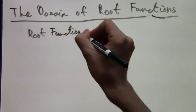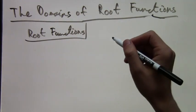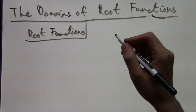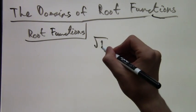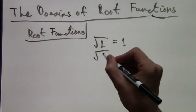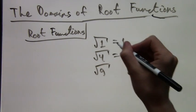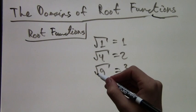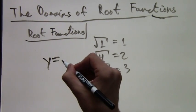For example, the square root of 1 equals 1, the square root of 4 equals 2, and the square root of 9 equals 3. That's because 3 squared is 9, 2 squared is 4, and 1 squared is 1.